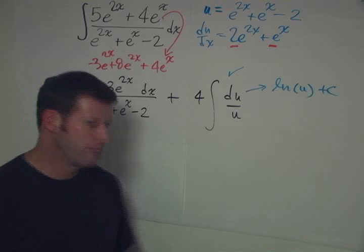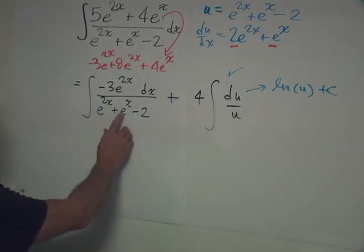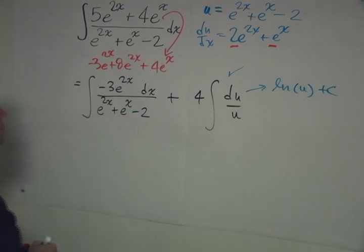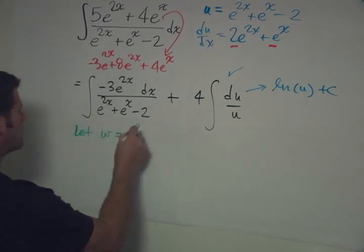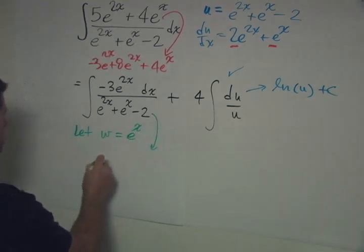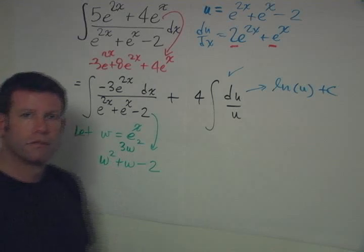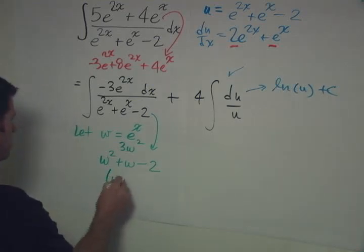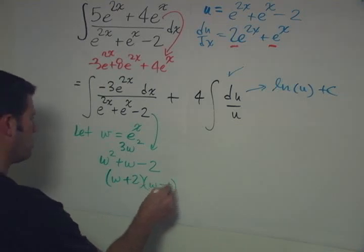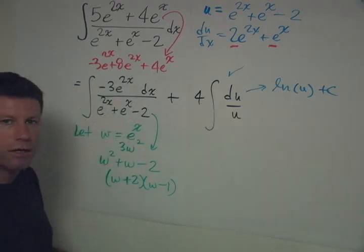Now the question is, what are we going to do with that? Well, I'm going to run out of board space here pretty quickly, but let's analyze it a little bit more before I have to erase. So we've got this e^(2x), e^x, and a 2. So now, what if we were to try something else? Let's say let w equal e^x, then this denominator becomes w^2 plus w minus 2, right? And the numerator becomes 3w^2. So now, have we helped ourselves out? Well perhaps, because we can factor this, and this becomes w plus 2 times w minus 1. So potentially, we could split it up and use partial fractions, but we have this w^2 in the numerator, and what are we going to do with that?